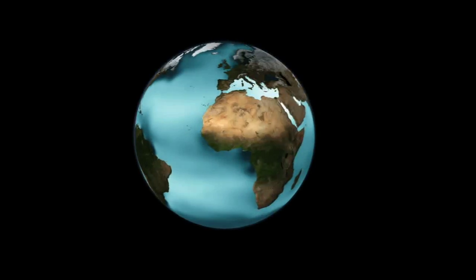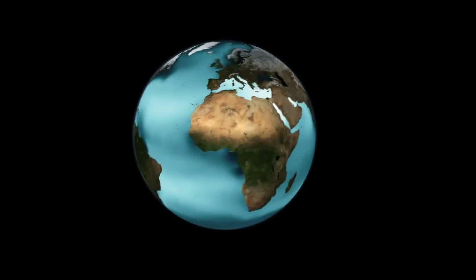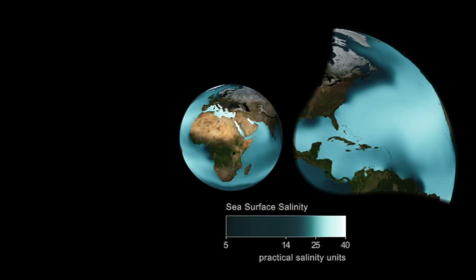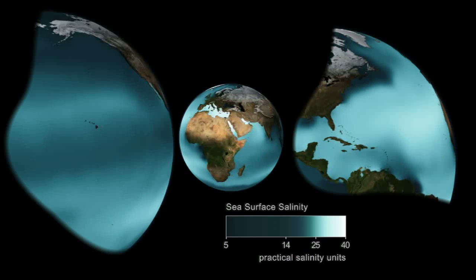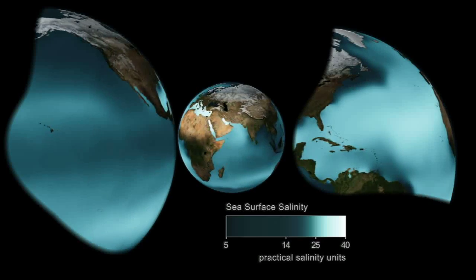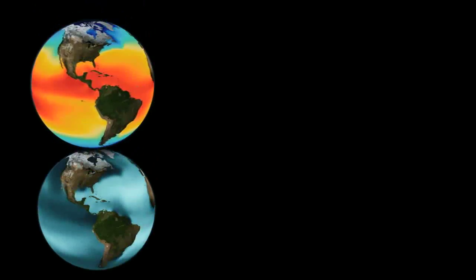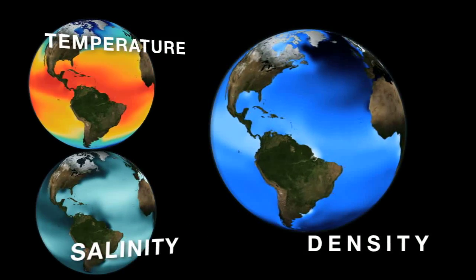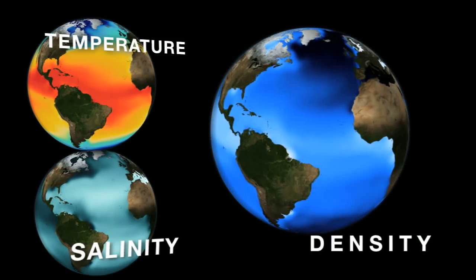Not all oceans have the same salinity. In fact, the North Atlantic Ocean tends to be the saltiest, much more than the Pacific. The salt in the ocean affects its density, just like the temperature affects its density. And the density — meaning the amount of mass per volume — is going to then impact where the water goes as it circulates throughout the globe.